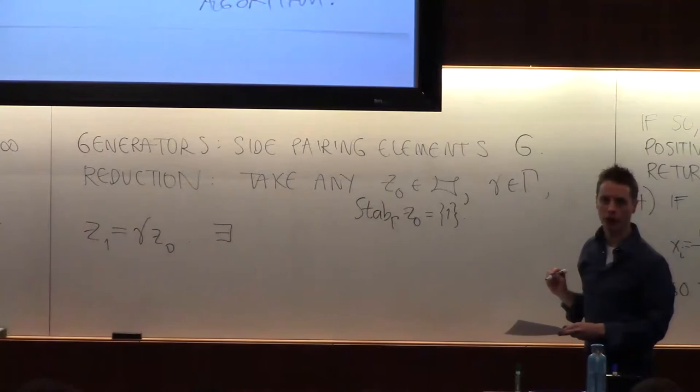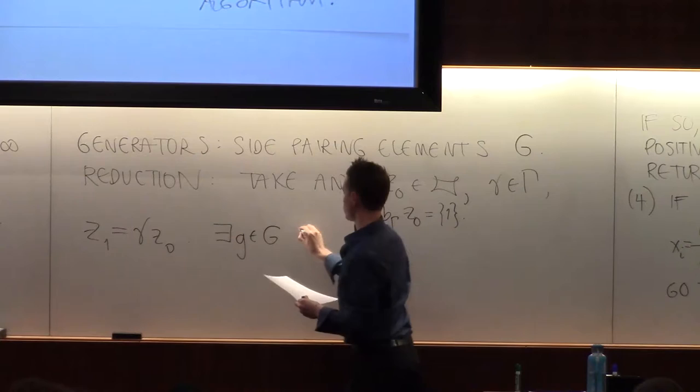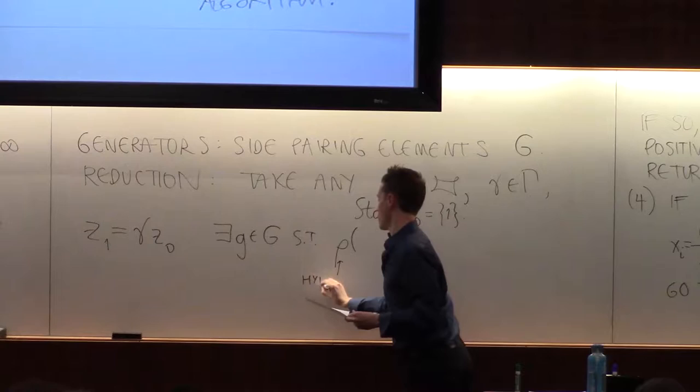For generators, a set of generators, so the elements and their inverses, the assertion is that there exists a g in G such that the distance from... this is the hyperbolic distance, we talked about that on Monday.